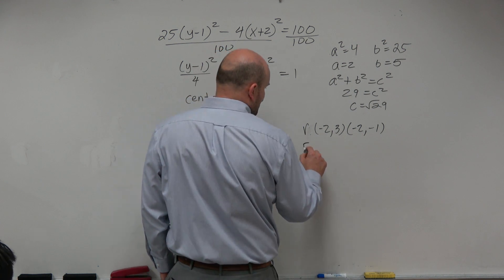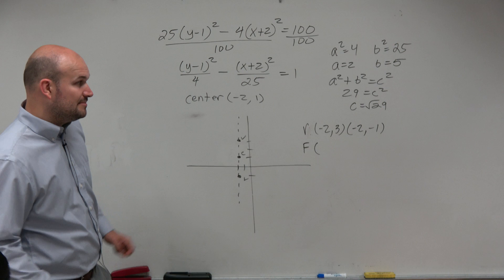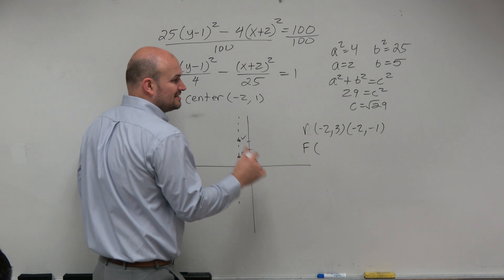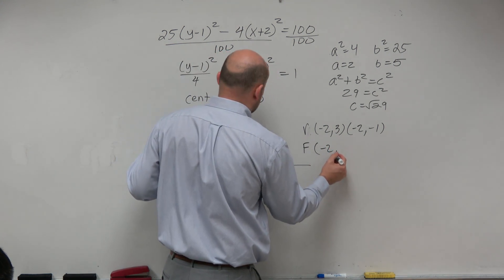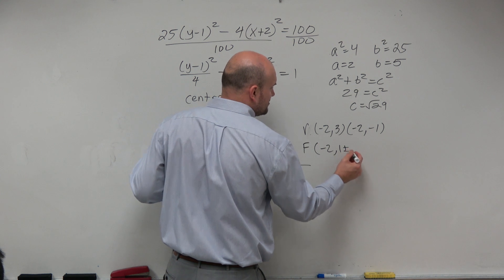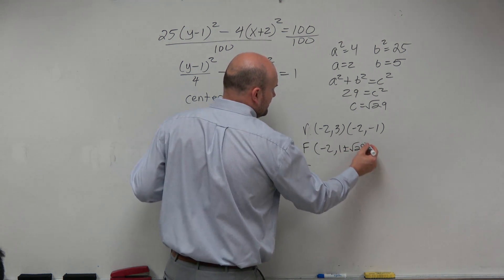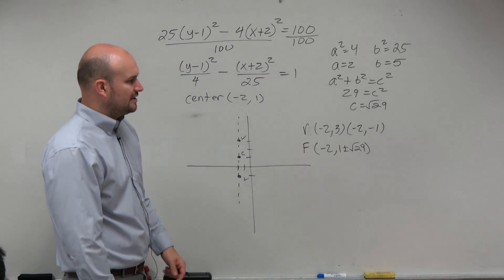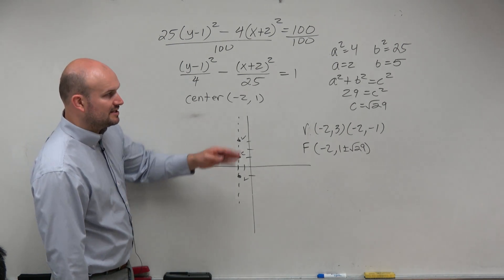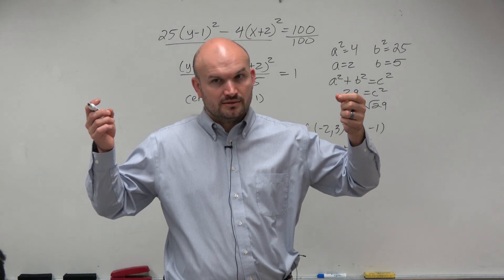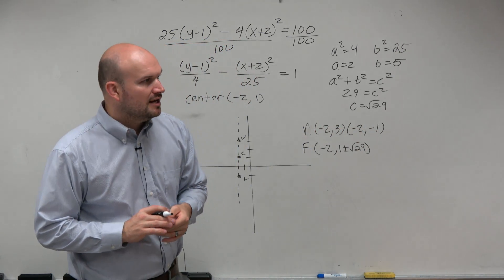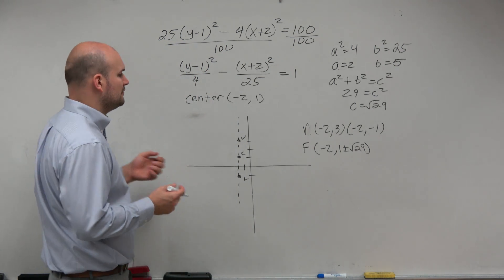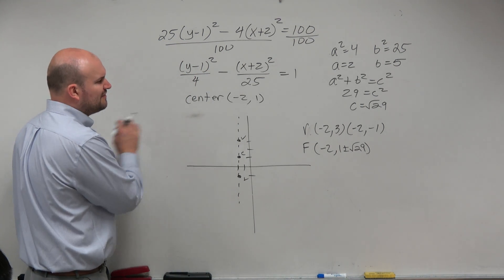To find my foci, it's the same idea, but we're adding and subtracting the square root of 29, which is not a nice number. So I'll just leave this as the representation: 1 plus or minus the square root of 29. You could represent that as two different coordinates — 1 plus root 29 and 1 minus root 29 — but we'll leave it together. I'm not going to worry about finding the co-vertices right now, because they aren't really on our axis.